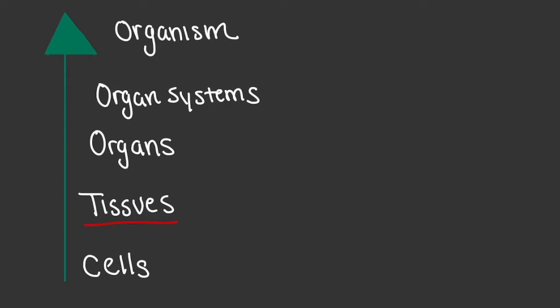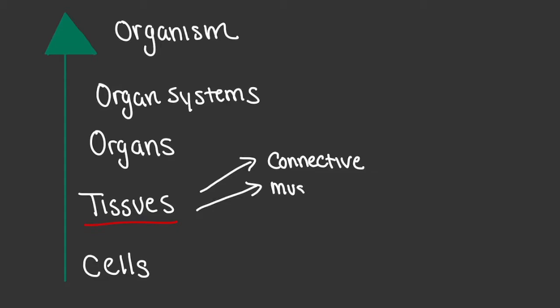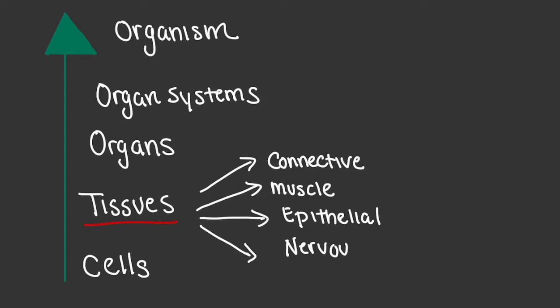The first type of tissue is what we refer to as connective tissue. The second is muscle tissue. The third is epithelial tissue. And the fourth is nervous tissue, which you might also hear referred to as neural tissue.